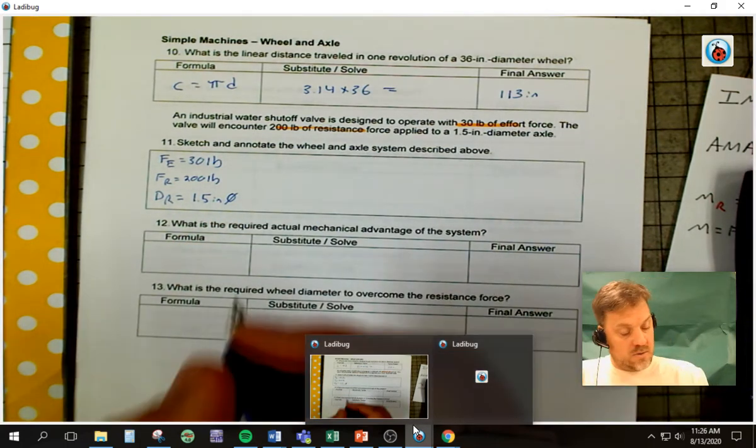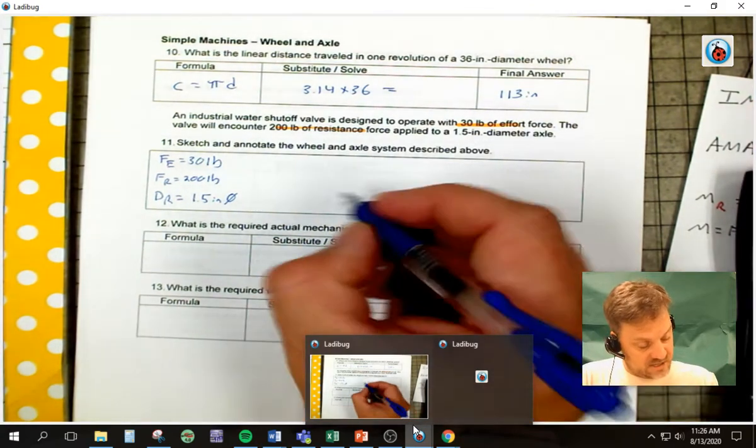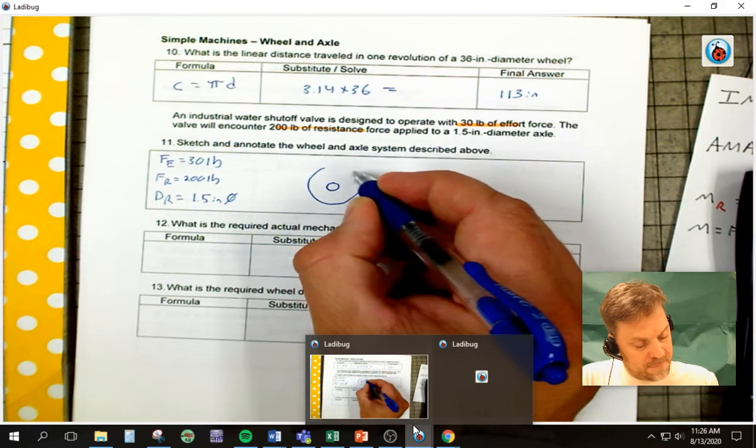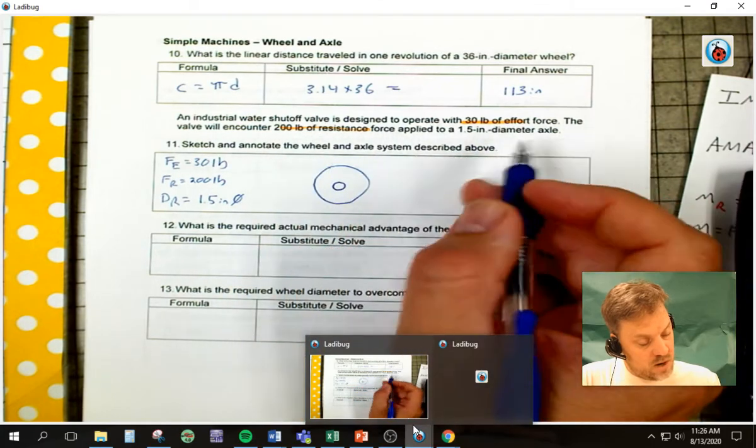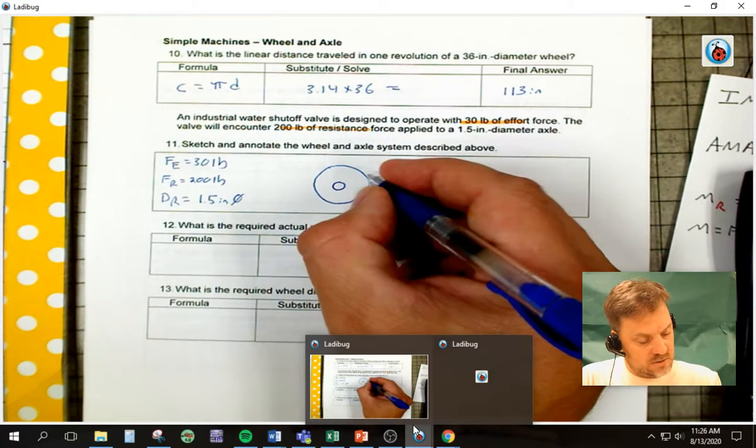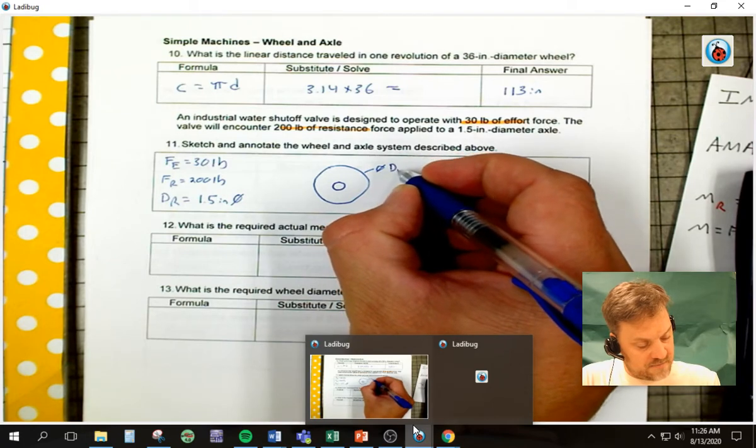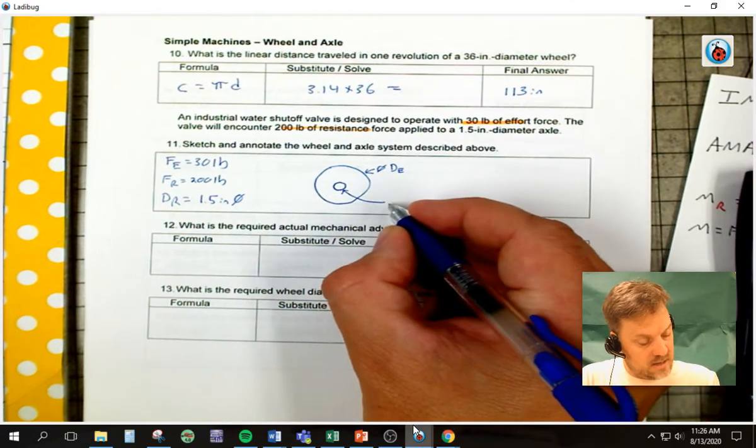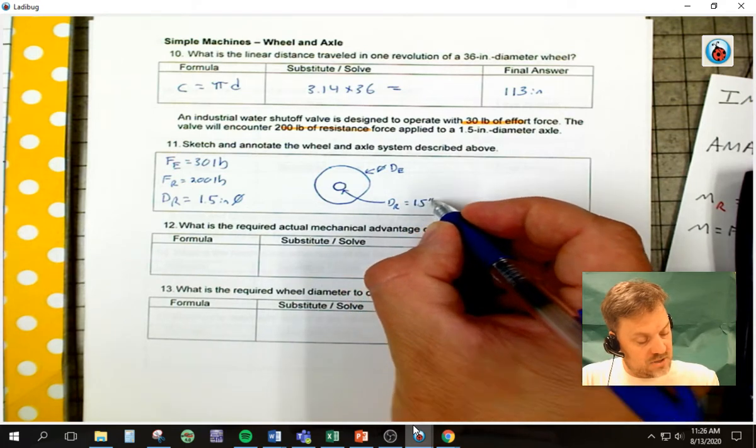Okay. So we just kind of write down that stuff. Next up, we're going to sketch this guy. So we've got an axle and we've got a wheel. And what do we know about this industrial water shutoff valve? So where are you going to be touching this thing, right? You're going to be turning it here. So this is going to be, this diameter will be my distance effort. Whenever we, we may not know it yet.